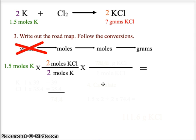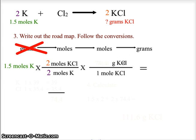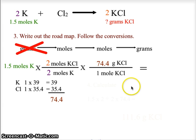The mole ratio uses the coefficients from the balanced chemical equation. There are 2 moles of potassium and 2 moles of potassium chloride. To go from moles of KCl to grams of KCl, we put 1 mole of KCl on the bottom and grams of KCl on top, using the molar mass: potassium is 1 × 39 and chlorine is 1 × 35.4, giving a molar mass of 74.4 grams per mole.